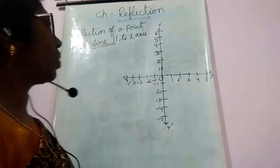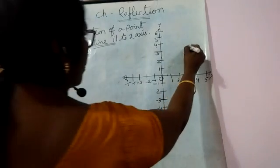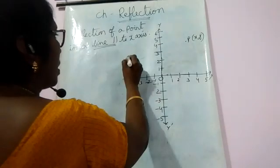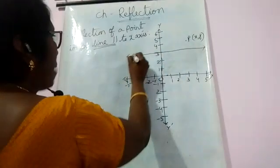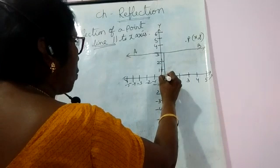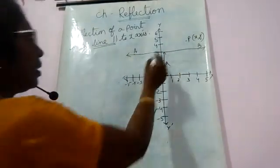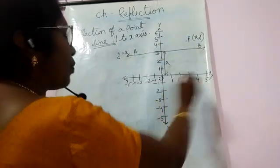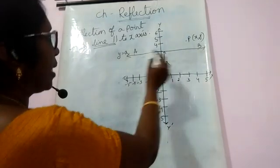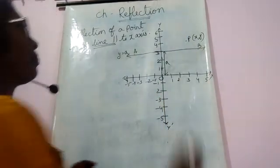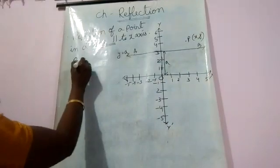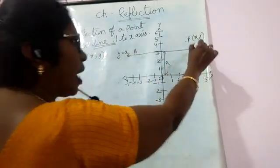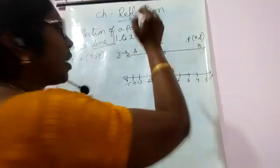Let P(x,y) be a point in a plane. AB is a line parallel to the x-axis at a distance of 'a' units from the x-axis, meaning the equation of AB is y = a. The equation of the x-axis is y = 0, and the equation of a line parallel to the x-axis is y = a. We have taken a point P(x,y). Now let me explain when this point P reflects through line AB, which is parallel to the x-axis, what are the coordinates of point P'.